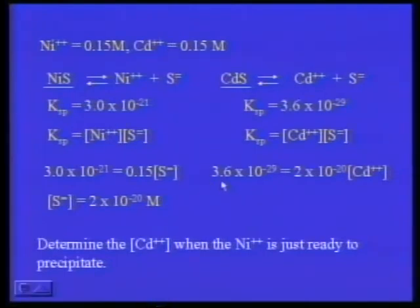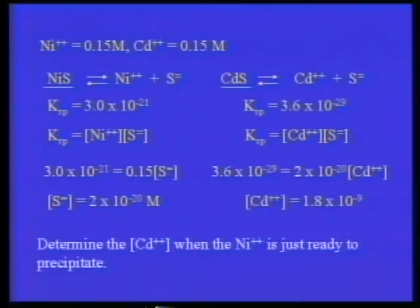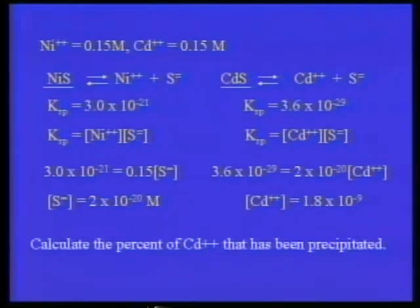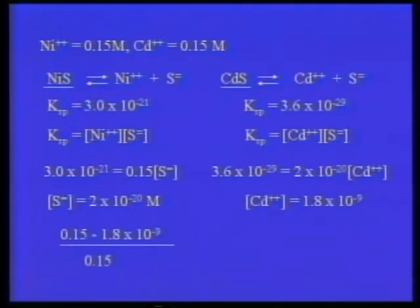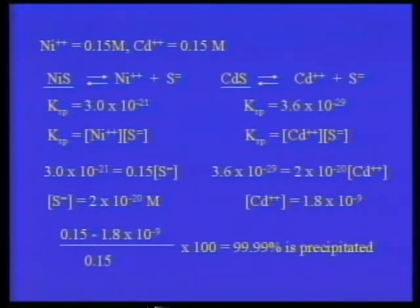We take the Ksp expression for cadmium. If the nickel is just ready to precipitate, the sulfide ion concentration is 2×10⁻²⁰. We plug that in and calculate the cadmium ion concentration. We find that at the point when nickel sulfide is just ready to precipitate, the cadmium ion concentration is 1.8×10⁻⁹ moles per liter — and we started with 0.15 molar. That means 99.99% of the cadmium has been precipitated.